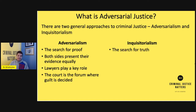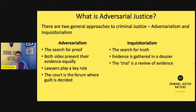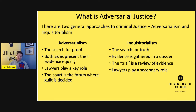Inquisitorialism on the other hand is seen to be a search for the truth. Evidence is gathered in a dossier from the police, guided by a prosecutor or an instructing magistrate. The trial in the adversarial setting is the forum in which guilt is decided, whereas in the inquisitorial setting the trial is basically a review of the evidence — it's far more of a process. Lawyers play a secondary role, and there's no real prosecution battling defence as such. In England and Wales and in common law countries such as the United States, we have an adversarial justice system.